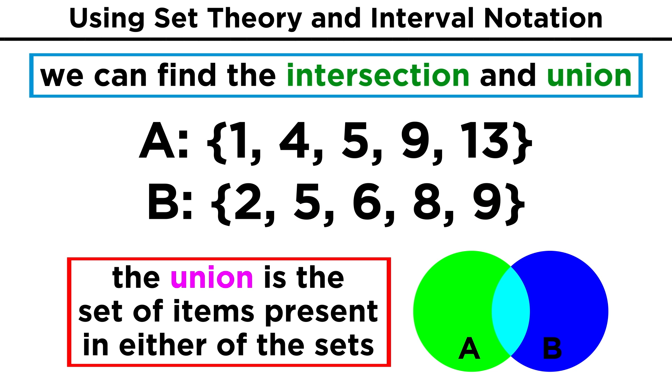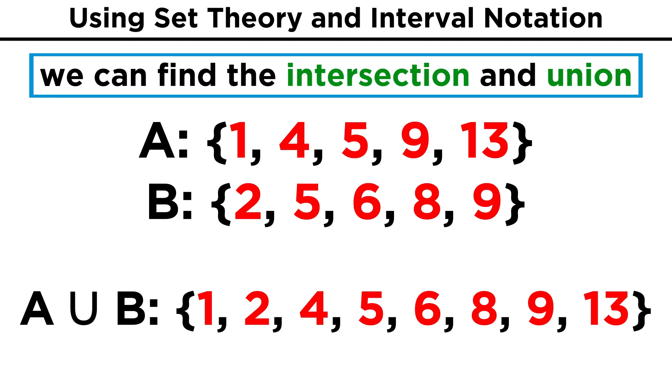By contrast, the union of two sets is the merging of the sets. Every item that shows up in either set will be in the union of the sets, so with the Venn diagram, the union is just the whole thing. In this case, the union of these two sets, which is represented by this symbol that looks like a right-side-up capital U, will be a larger set containing all of these numbers.